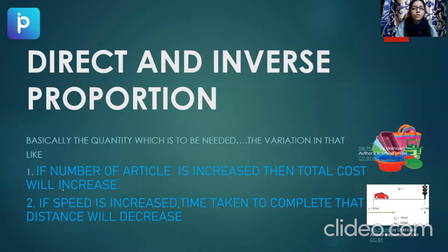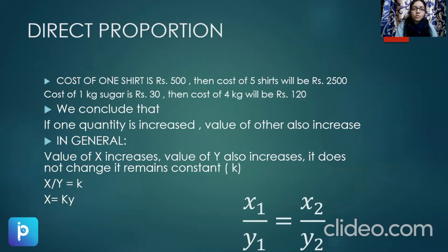So these variations we'll be studying in direct and inverse proportion. The first is direct proportion. If I say the cost of one shirt is Rs. 500, then the cost of five shirts will be Rs. 2500. If the cost of one kg of sugar is 30, then the cost for four kg of sugar will be 120. So you can see by these examples that if one quantity is increased, the value for the other also increases.